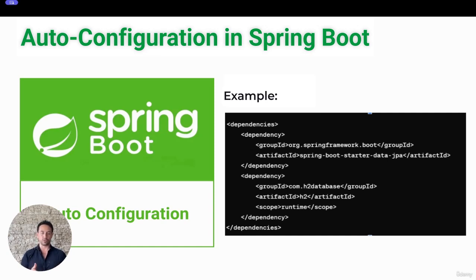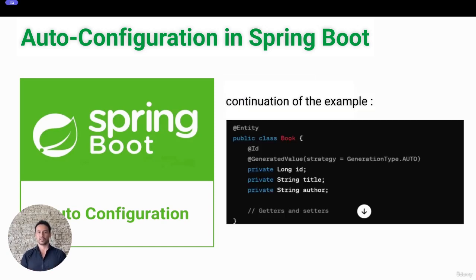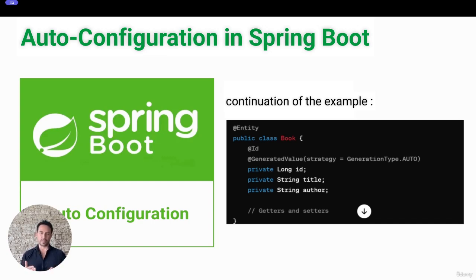Next, you can proceed to create a JPA entity called Book, as you can see on the screen. This entity will be used to communicate with the underlying database system for both reading and writing operations.